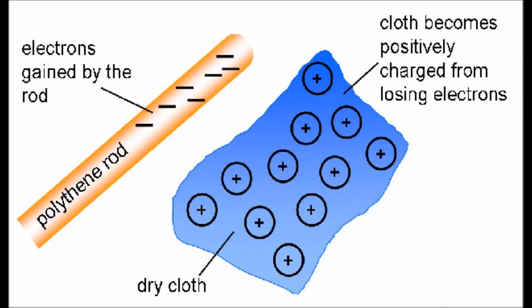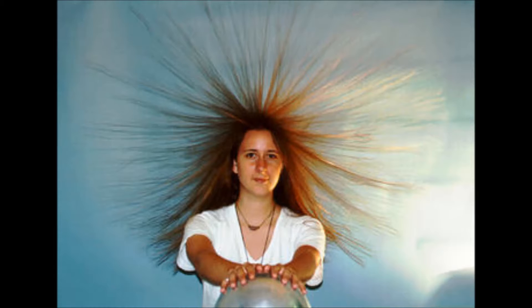So Ben, what's that? Well, all forms of electricity involve electrons. These are the negatively charged particles that surround the outside of an atom in a cloud. Static electricity is special though, because the electrons aren't moving very much.